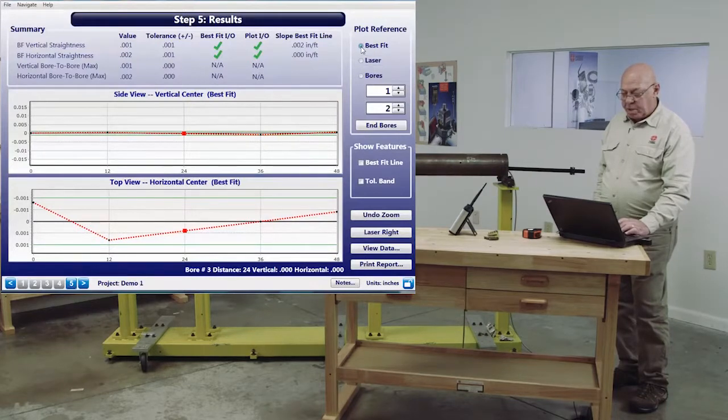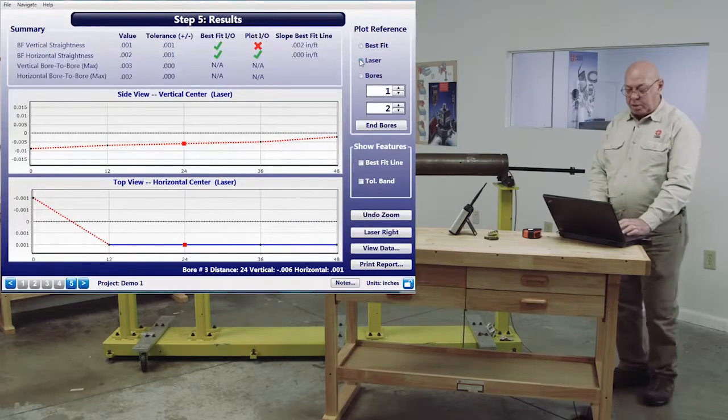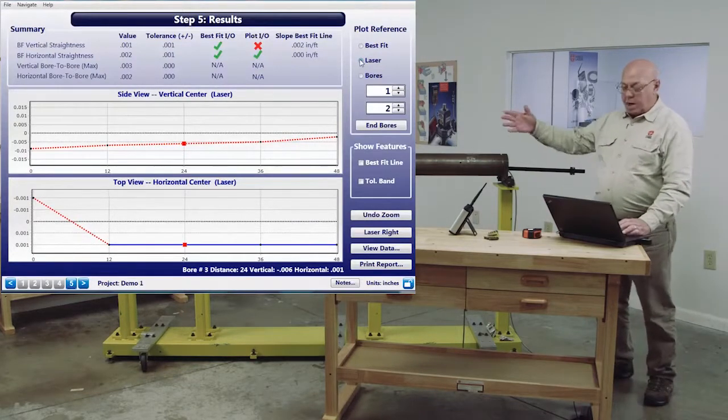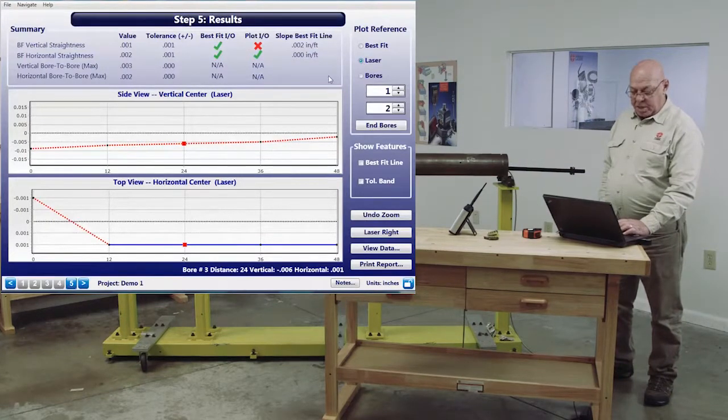I have the plot on the right side of the screen. I can show this relative to a best fit plane. I can show this relative to the laser beam. In other words, if I want to look at this, what is my alignment like relative to the gearbox? This plot will show me that.